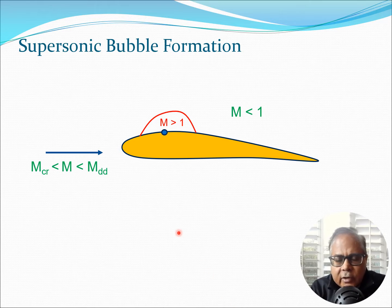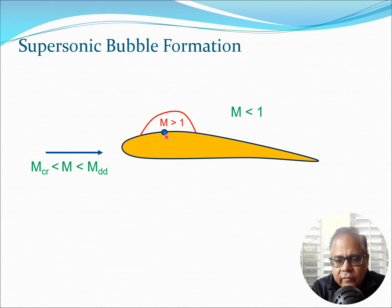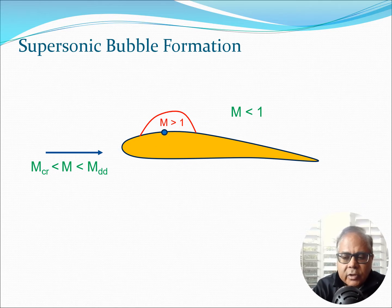If you fly faster than the critical Mach number but slower than the drag divergence Mach number, a region of M greater than 1 forms on the top surface of the airfoil near the maximum Mach number point. This region is known as the supersonic bubble. Outside the supersonic bubble the flow remains subsonic, M less than 1, but inside it M is greater than 1.